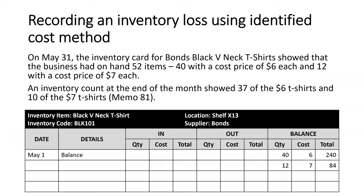So how do we record an inventory loss using the identified cost method? We have an example here for black v-neck t-shirts. On May 31st, the inventory card showed we had 52 on hand: 40 with a cost price of $6 and 12 with a cost price of $7. The inventory count at the end of the month — May 31st — showed that we had 37 of the $6 t-shirts and 10 of the $7 t-shirts, as per Memo 81.